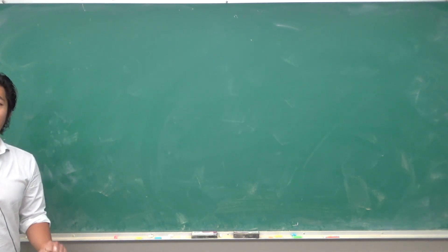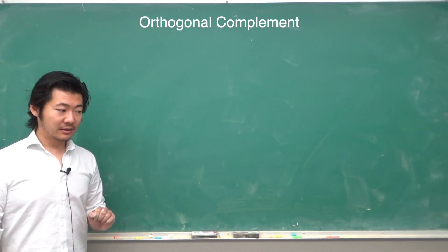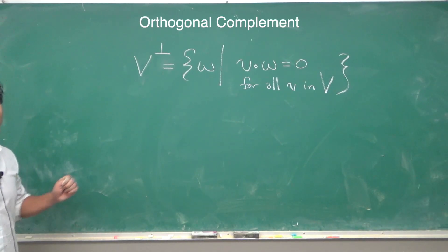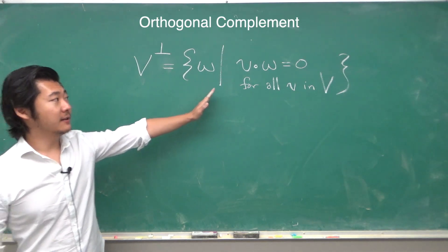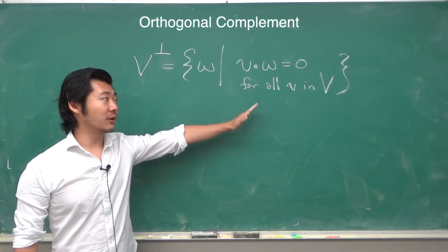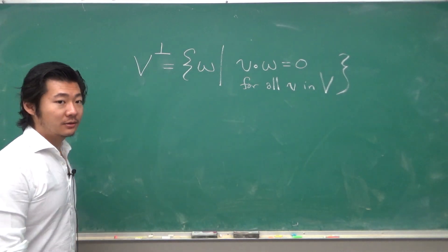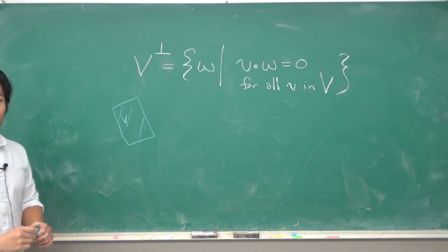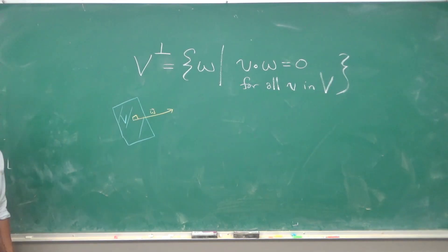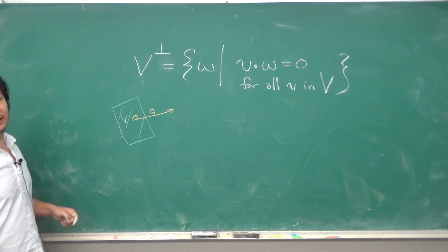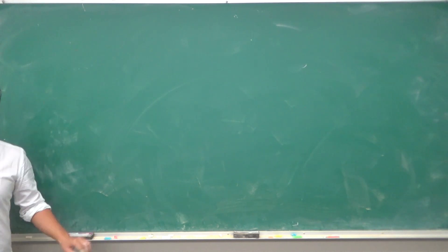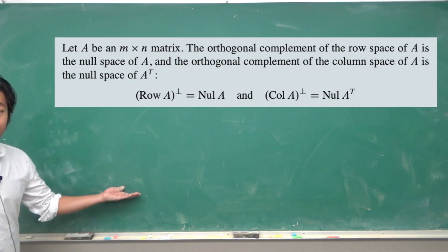Now let's discuss a little bit about orthogonal complements. An orthogonal complement of a subspace V are all the vectors W such that V dot W equals 0 for all V and V. So geometrically, if you have some subspace V, then it would be a collection of vectors W that are perpendicular to the entire space V. And an interesting theorem concerning orthogonal complements is the following.